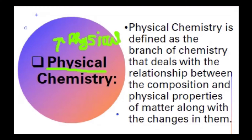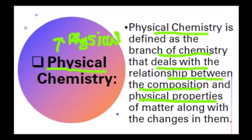The definition of physical chemistry: it is the branch of chemistry that deals with the relationship between the composition and physical properties of matter. We study two things: composition and physical properties of matter.